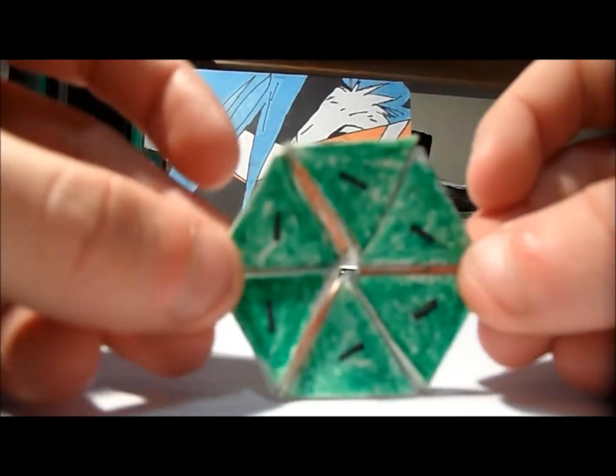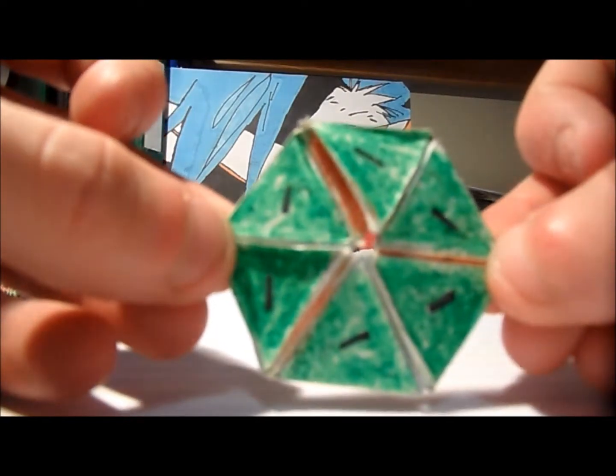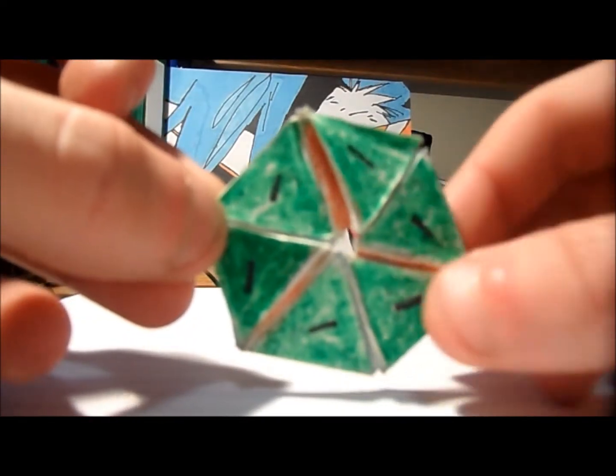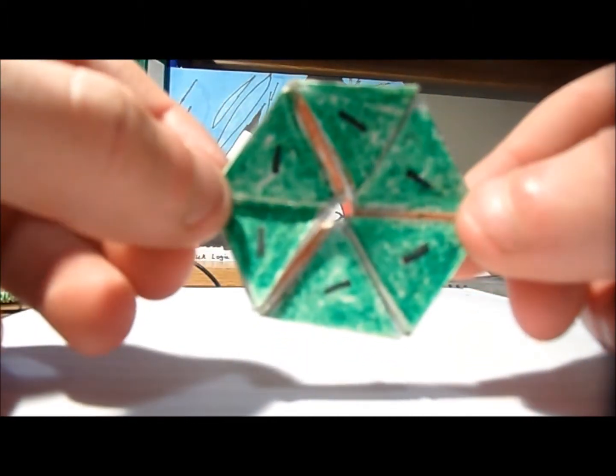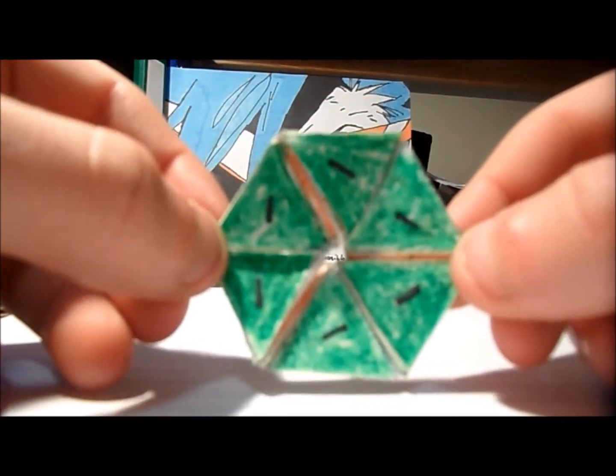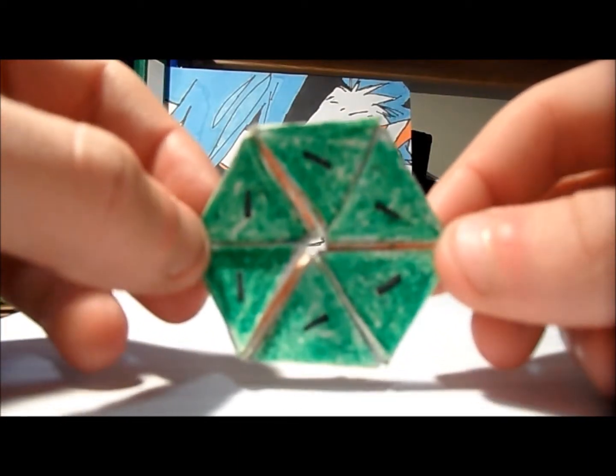But this hexagon, hexagonal shape, is partially where the hexaflexagon gets its name from. This is my test one, it's kind of smaller than the others, and it was the first one I actually made. And all the sides, there are six sides, they've all got different colors on them, and the numbers of the sides. So this one's obviously green and it's got one.